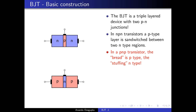NPN transistors are actually more popular than PNP transistors simply because electrons are more mobile than holes. In an NPN transistor, it is the electrons which carry the bulk of the current. However, PNP transistors also have their own uses, so both kinds are quite common in real usage.